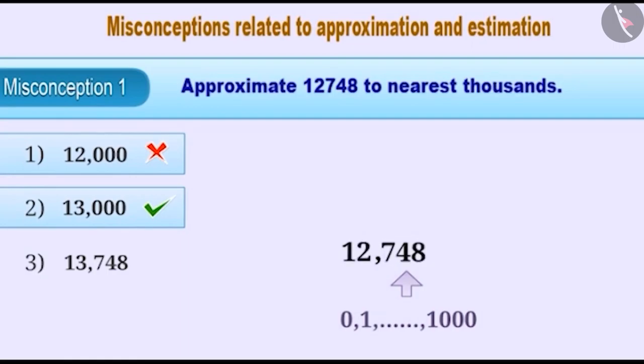Another mistake is very common. Sometimes, we nullify the last three digits but forget to increase the value of the thousands place by 1. Similarly, sometimes we add 1 to the thousands place but forget to nullify the last three digits.